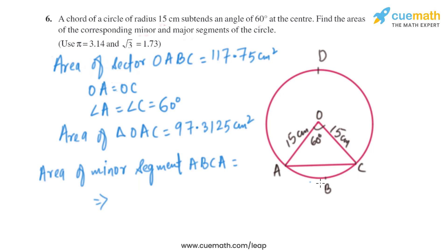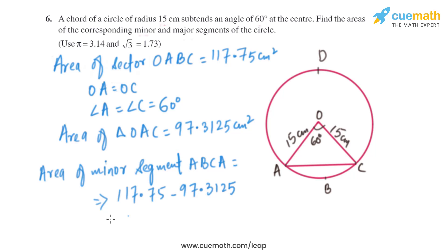The area of the minor segment ABCA is the difference between the two: 117.75 minus 97.3125, giving us the area of the minor segment as 20.4375 square centimeters.